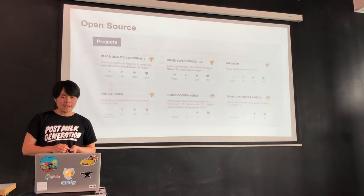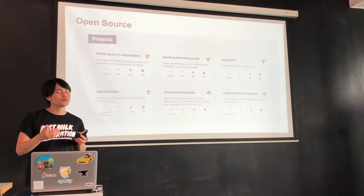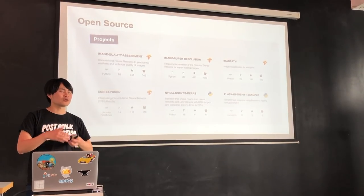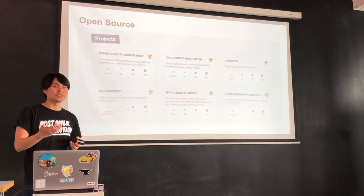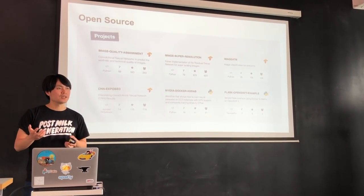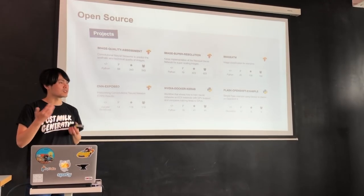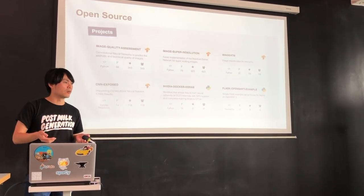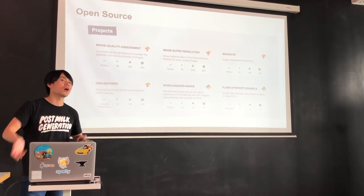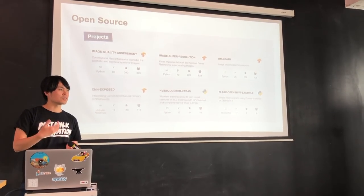On open source: these are six projects from idealo. When I joined, they wanted to do open source, but open source is not something you can just claim to do — you need a strategy, a brand, committed people, and you need to give people time for it. Open source not only helps us attract better talent. For one project, we already have several GitHub stars after only one year. When candidates visit the idealo GitHub page and see open source machine learning projects, it gives them a glimpse of what they could work on.